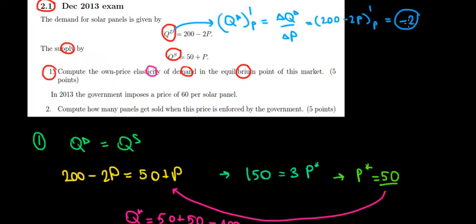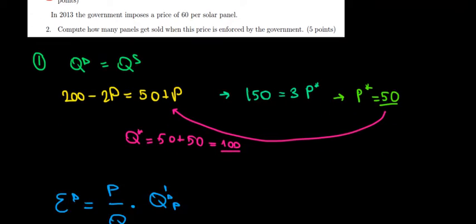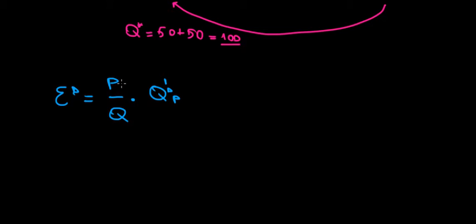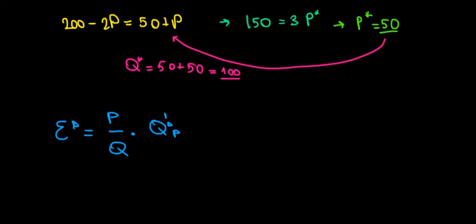That's the derivative that we are looking for and we're going to substitute into our elasticity function. The price in equilibrium is 50, the quantity in equilibrium is 100, and the derivative of the quantity is equal to minus 2. So the elasticity is going to be 50 divided by 100 times minus 2.